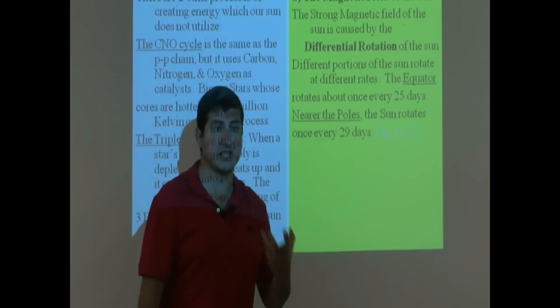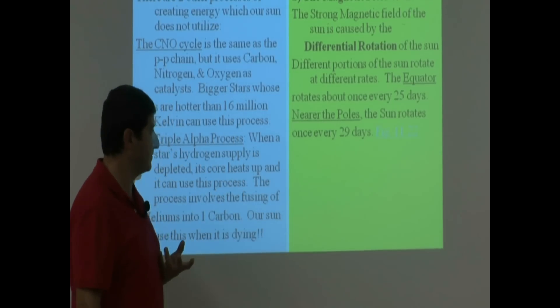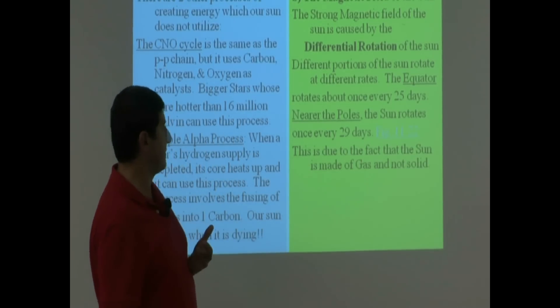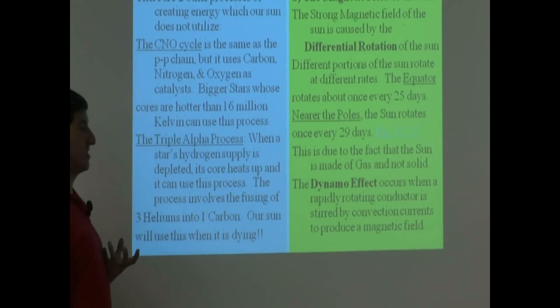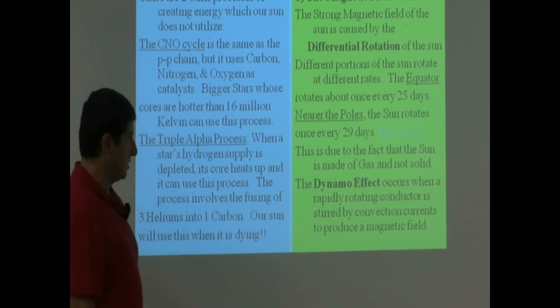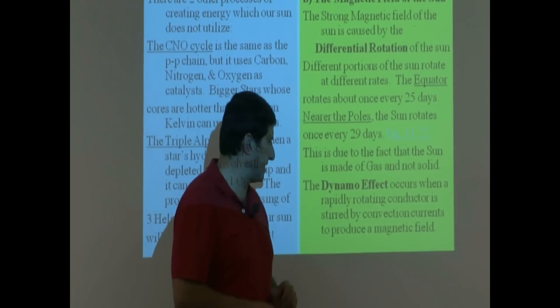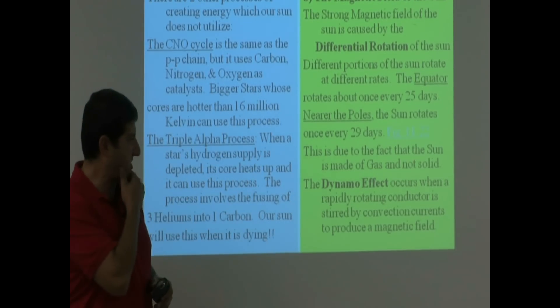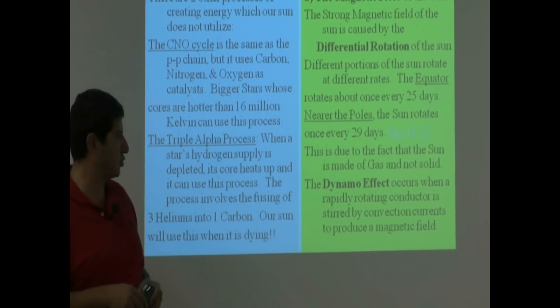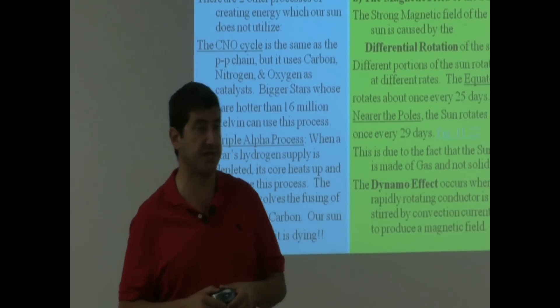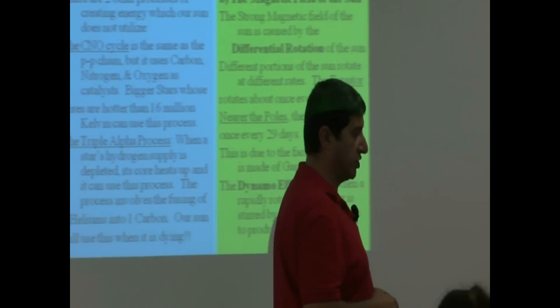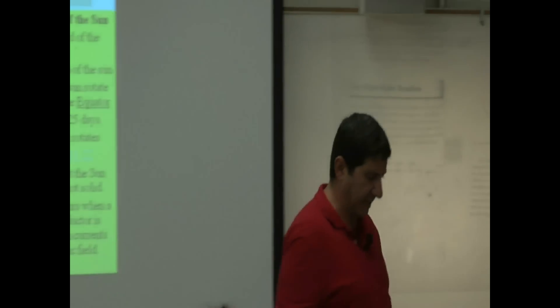And what that does, it creates a strong dynamo effect. This is due to the fact that the Sun is made up of gas and not solid, and the dynamo effect of the Sun is huge. So this occurs when a rapidly rotating conductor is stirred by convection currents to produce a magnetic field, and therefore the dynamo effect of the Sun is much stronger than the Earth.